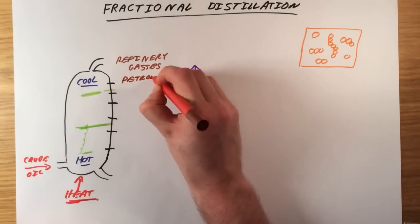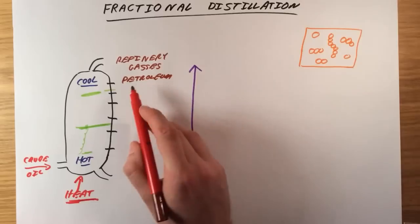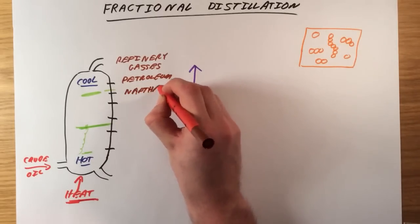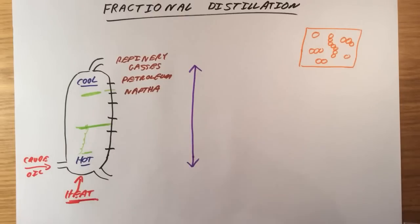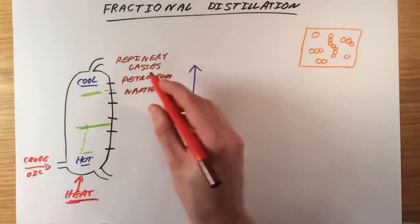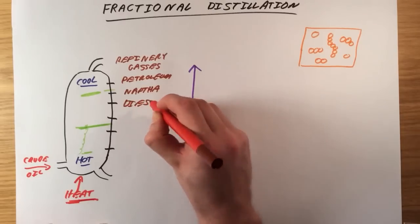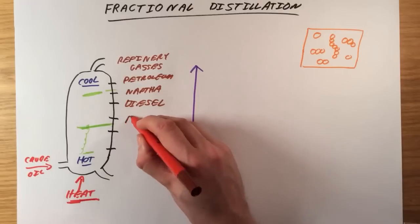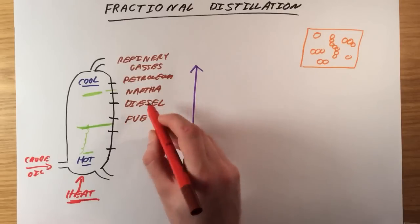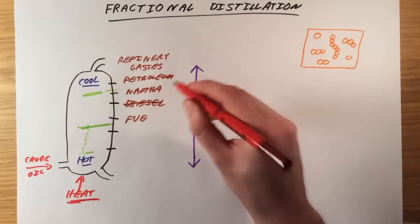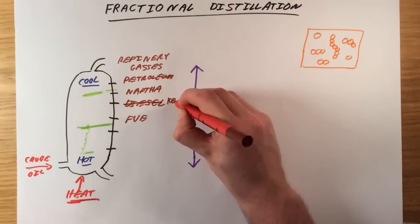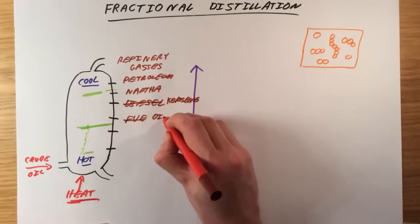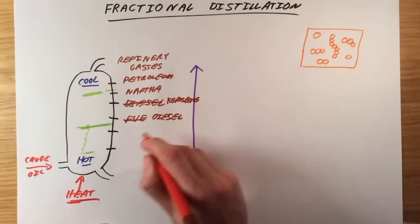Next, we get petroleum which can be refined further and be turned into petrol. After that, we get something called naphtha which is used to make a lot of chemicals. It's really important starting materials to make things like plastics. After that, we get kerosene which is used as fuel in jets. Then we get diesel, used as a fuel in cars and lorries and trains.